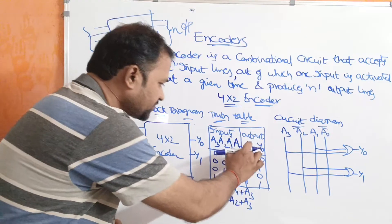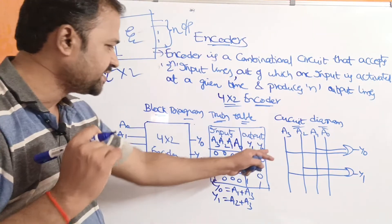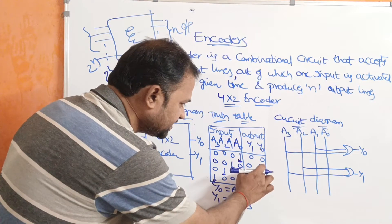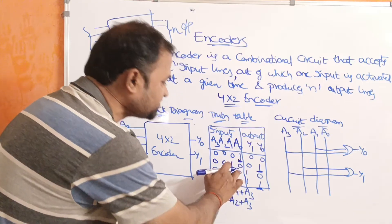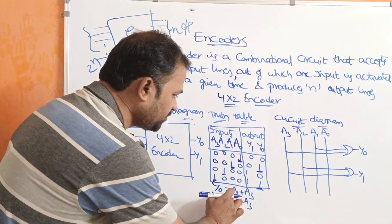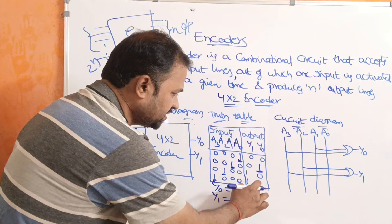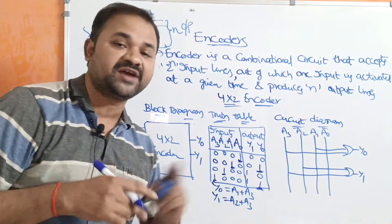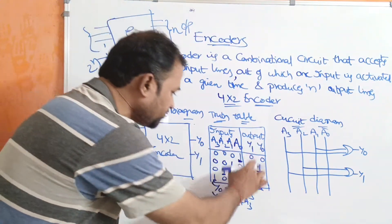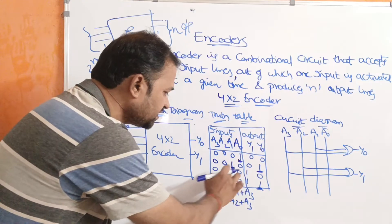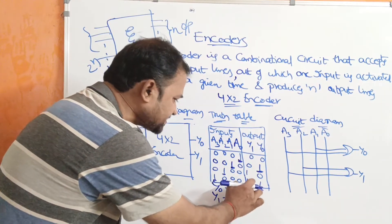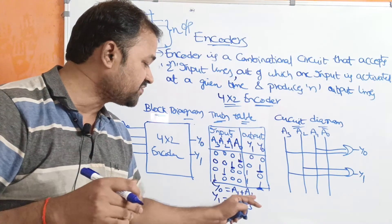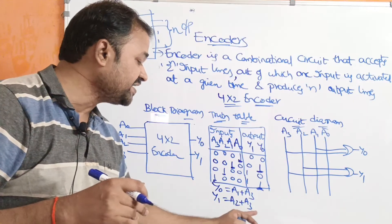Now let us evaluate the logical expressions for Y0 and Y1. Observing the Y0 column, Y0 has two 1s: Y0 is 1 when A1 is 1, and Y0 is 1 when A3 is 1. So Y0 = A1 + A3. Similarly, Y1 is 1 when A2 is 1, and Y1 is 1 when A3 is 1. So Y1 = A2 + A3.